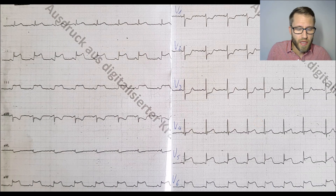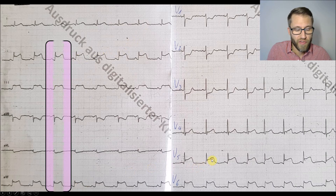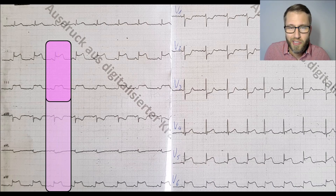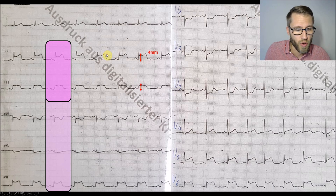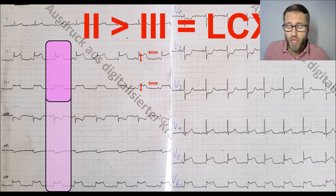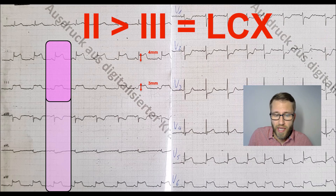Now let's look at this ECG pattern. Almost the same structure — we have ST elevation in leads 2, 3, AVF as well as V5 and V6. We look at the inferior limb leads, especially lead 2 and lead 3, and we measure the ST elevation again. This time we have a value of 4 mm in lead 2 and 3 mm in lead 3. So the ST elevation is greater in lead 2 than in lead 3, and this would encode for the LCX — most probably the culprit lesion is in the LCX.